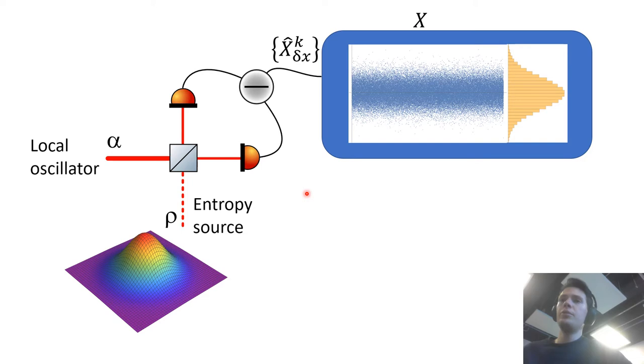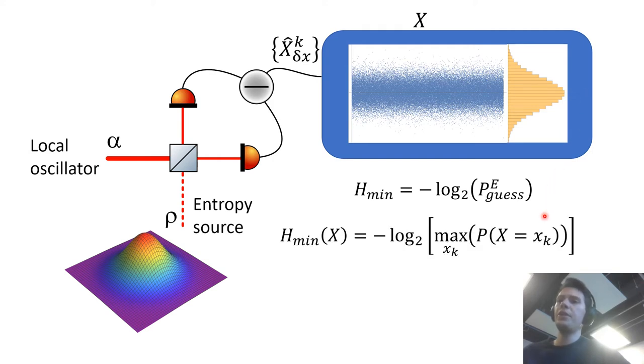Now the way to extract unbiased random numbers from that is to calculate the min entropy which is related to the probability of an adversary guessing the output of your QRNG. So in a case like this where you trust your measurement device and you also trust your entropy source then the best strategy for an adversary is just to guess the most likely value. And so the min entropy is just given by this quantity.